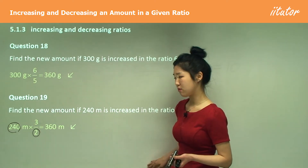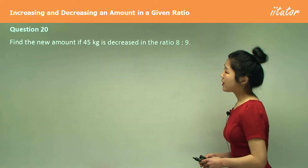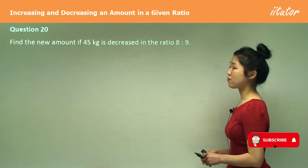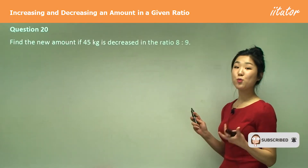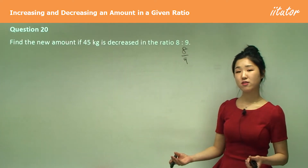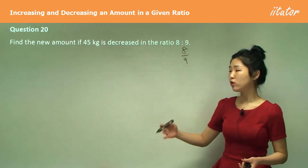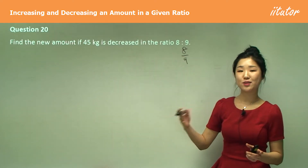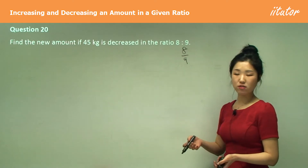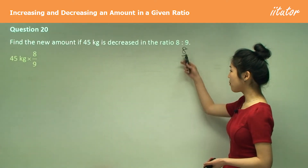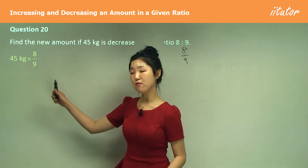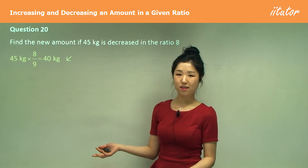Question 20: find the new amount if 45 kilograms is decreased in the ratio 8 to 9, which is 8 over 9. Now 8 over 9 is 0-point-something — a number less than 1 — so multiplying by it gives a result less than the original. All you need to do is multiply 45 kilograms by 8 over 9. Since 45 divided by 9 is 5, times 8 gives 40 kilograms.